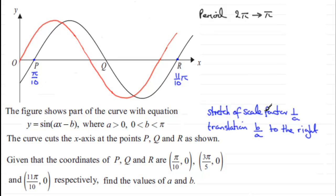So the period of our original sine wave has now reduced down to π units. And that represents this stretch, scale factor 1 over a. So you can see it's been halved. So it follows from this that 1 over a must equal a half. And it follows then that a must be equal to 2. Well there's our first answer.